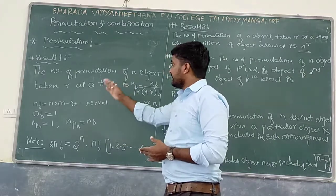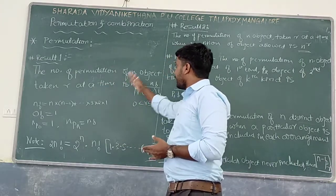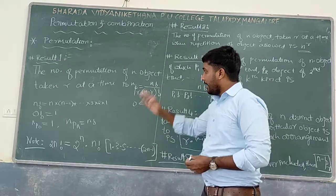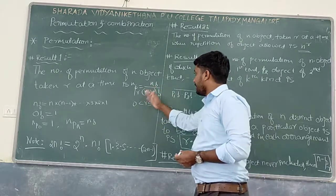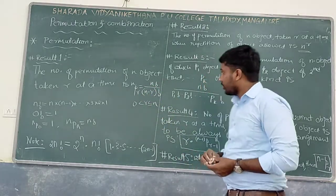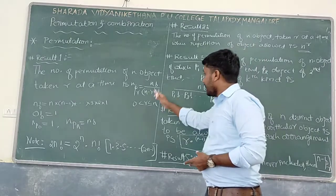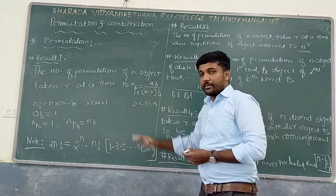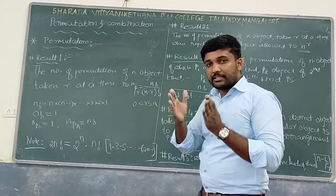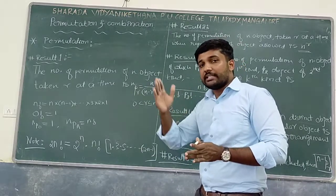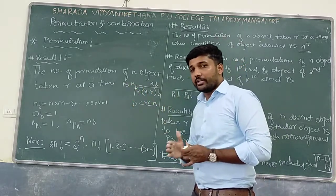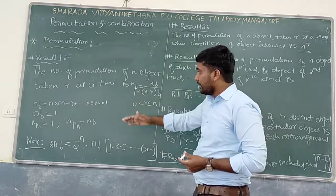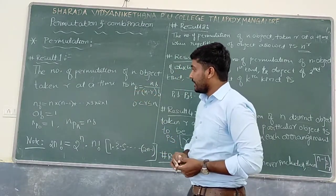The first result: it is the number of permutation of n objects taken r at a time. It is given by nPr = n factorial divided by (n minus r) factorial. This means out of n objects, selecting r distinct objects and arranging them in different orders, denoted by nPr. Here are some important points related to factorial.